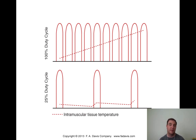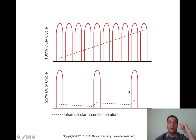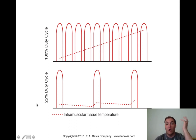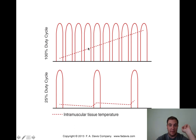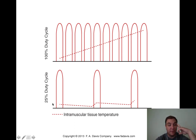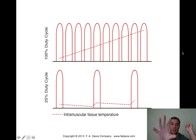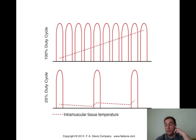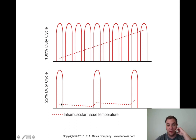At 100% duty cycle, heat increases continuously because the ultrasound is always on - throughout a 7-minute treatment, temperature continually rises. At 25% duty cycle, it's on one out of every four cycles: on, off, off, off, on. This produces only minimal heating which then decreases, so it's not enough to actually cause thermal changes. At 75% duty cycle, every fourth pulse would be absent, producing more heat than 25% but less than 100%.